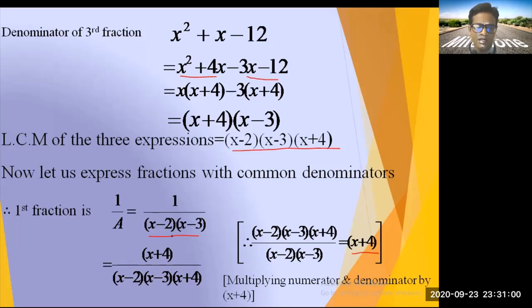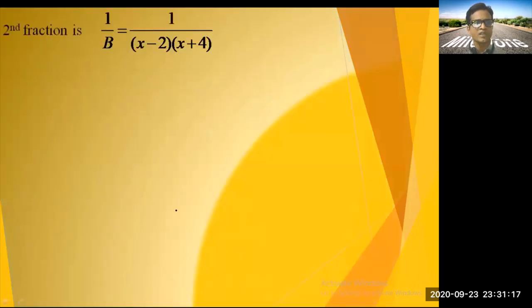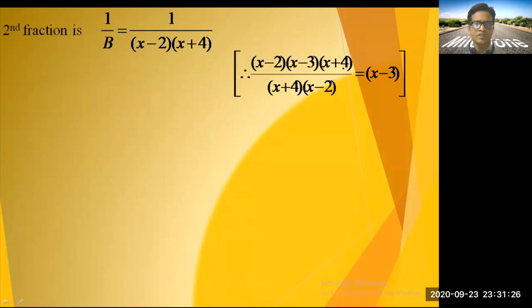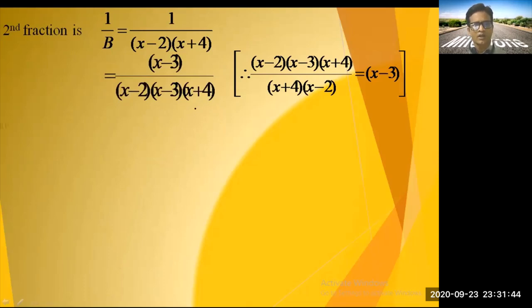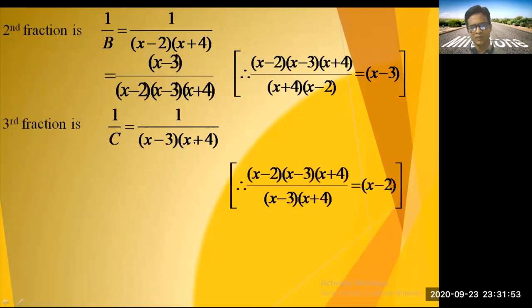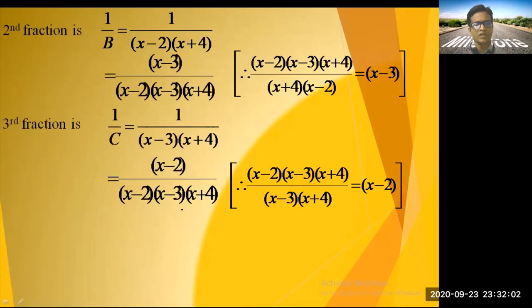For 1/B = 1/[(x-2)(x+4)]: LCM ÷ denominator = (x - 3). Result is (x - 3) / [(x - 2)(x - 3)(x + 4)]. For 1/C = 1/[(x+4)(x-3)]: LCM ÷ denominator = (x - 2). Result is (x - 2) / [(x - 2)(x - 3)(x + 4)].